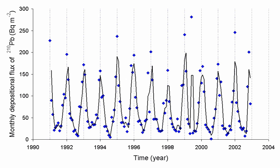Radon has no stable isotopes. 37 radioactive isotopes have been characterized, with atomic masses ranging from 193 to 229. The most stable isotope is 222 Rn, which is a decay product of 226 Ra, a decay product of 238 U. A trace amount of the isotope 218 Rn is also among the daughters of 222 Rn. Three other radon isotopes have a half-life of over an hour: 211 Rn, 210 Rn, and 224 Rn. The 220 Rn isotope is a natural decay product of the most stable thorium isotope 232 Th, and is commonly referred to as thoron.